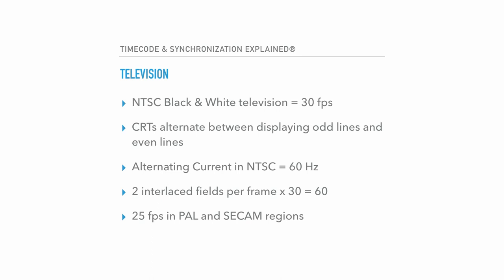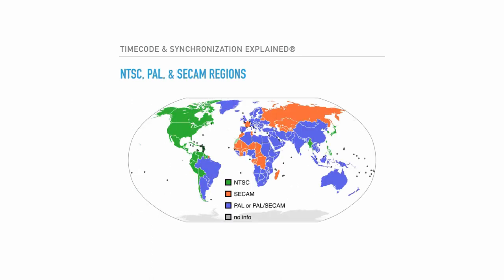In the rest of the world, the frequency of alternating current is 50 Hz, and so broadcast in PAL and SECAM regions is set to 25 frames per second.